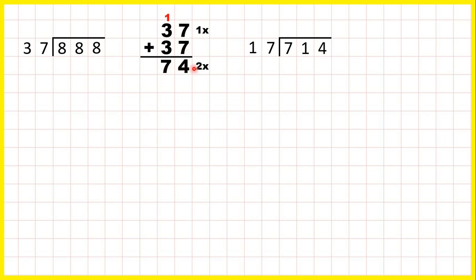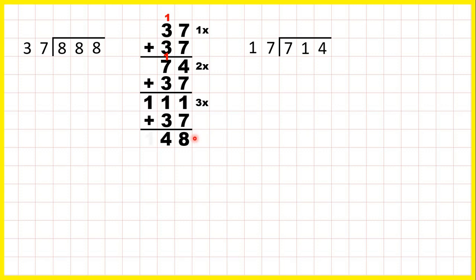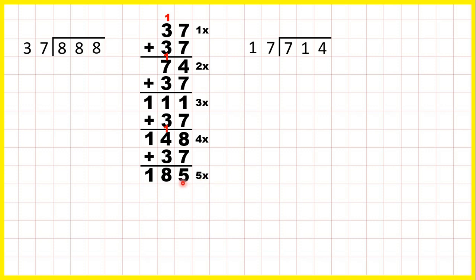74 for 2 times. Add another 37 we get 111 for 3 times. Another 37, that's 148 for 4 times. And if we add one more 37 we get 185 for 5 times. We can be confident that we haven't made a mistake in our calculations because 5 times any number always ends in a 5 or 0.